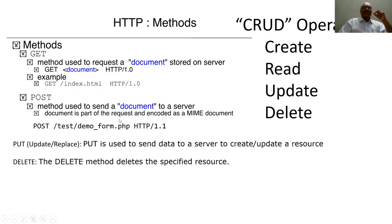The POST method is used to send a document to a server — if the document is not already on the server, it creates one. The client posts information to the server, meaning something is being created, correlating to the CRUD operation of Create. The PUT method is used to either update or replace existing information on the server, correlating to the CRUD operation of Update. The DELETE method deletes a specified resource or web document on the server; delete operations are usually minimal in web applications so users cannot delete existing server information.